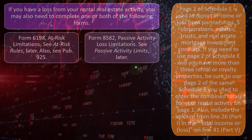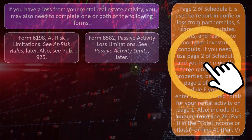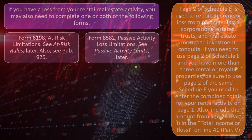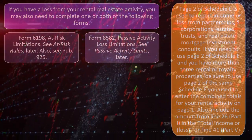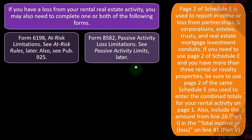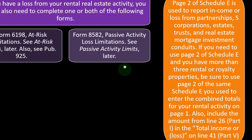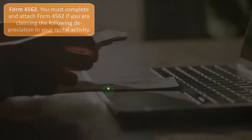Page two of Schedule E is used to report income or loss from partnerships, S corporations, estates, trusts, and real estate mortgage investment conduits. If you need to use page two and you have more than three rental or royalty properties, use page two of the same Schedule E you used to enter the combined totals for your rental activity on page one. Also include the amount from line 26, Part I, in the total income or loss on line 41, Part V.